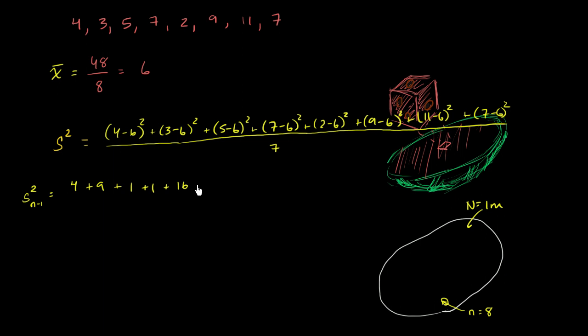9 minus 6 squared, well, that's going to be 9. 11 minus 6 squared, that is 25. And then finally, 7 minus 6 squared, that's another 1. And we're going to divide it by 7. And let's see if we can add this up. 4 plus 9 is 13, plus 1 is 14, 15, 31, 40, 65, 66.